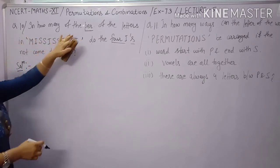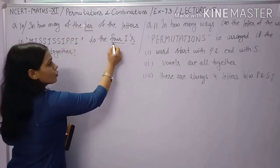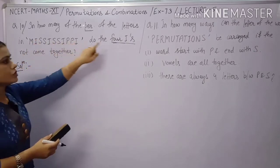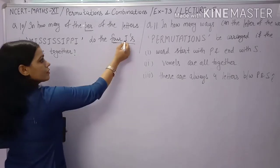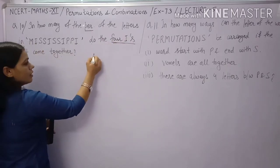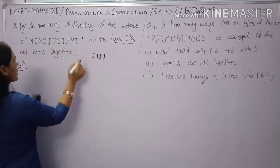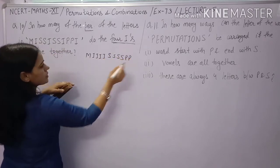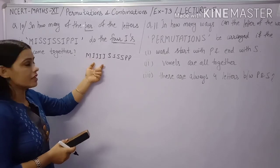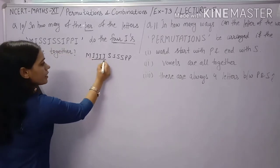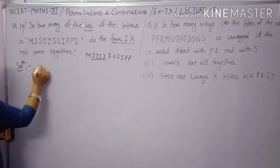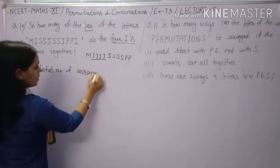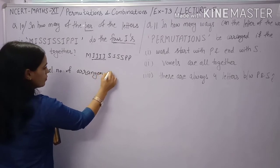Question 10: How many permutations of the letters of the word MISSISSIPPI have the four I's not coming together? First, find the total number of arrangements. The word has 11 letters.